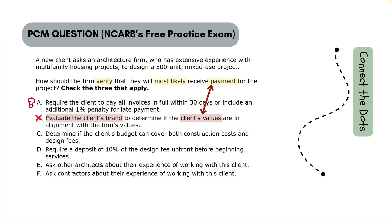Option B says: evaluate the client's brand to determine if the client's values are in alignment with the firm's values. This question is about whether the architect will receive payment — that's the concern. Option B deals with brand values alignment, which is an important concern for a firm generally, but it has nothing to do with this scenario. This scenario is focused on payment, so I immediately eliminated Option B.